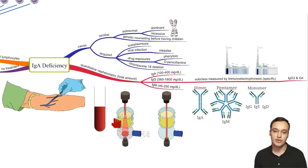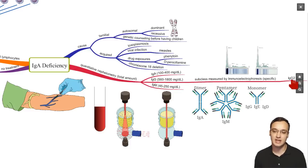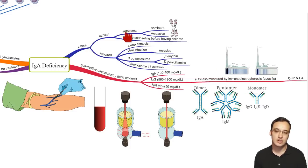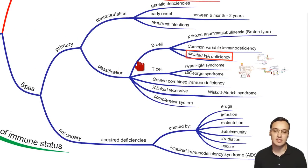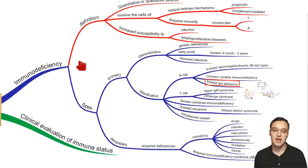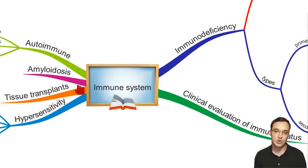For measurement, we took blood, placed it in a nephelometer, and quantitatively measured immunoglobulin levels — finding them below 100 mg/dL. We also measured subclasses like IgG2 using electrophoresis, confirming increased susceptibility to infection. The cause is either autosomal dominant or recessive genetic disease — genetic counseling is advised — with some rare acquired causes. IgA deficiency represents a B cell maturation defect within the primary immunodeficiencies, which itself is one branch of total immune system pathology.